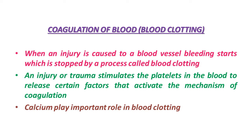Thrombin in turn is formed from another inactive substance present in the plasma called prothrombin. An enzyme complex — thrombokinase — is required for this reaction, and the enzyme thrombin is essential for this type of conversion. This complex is formed by a series of linked enzyme reactions, also called a cascade process, involving a number of factors present in the plasma in an inactive state that are then converted into an active state.